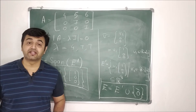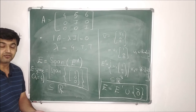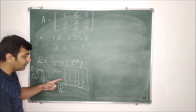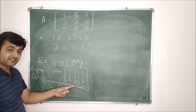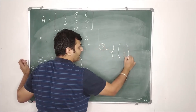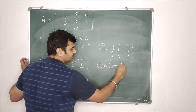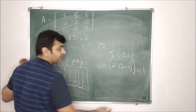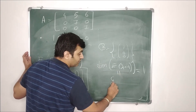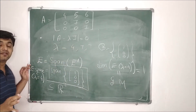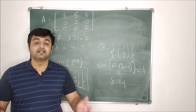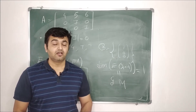Now comes geometric multiplicity. Since it is a space, you can talk about the basis and the dimension. In this case, the eigenspace is the span of only one vector, (1, 0, 0), so that vector acts as the basis. The basis has only one vector, and therefore the dimension of the eigenspace for lambda equal to 4 is 1. Geometric multiplicity is nothing but the dimension of the eigenspace — or equivalently, the number of linearly independent eigenvectors for a given eigenvalue.